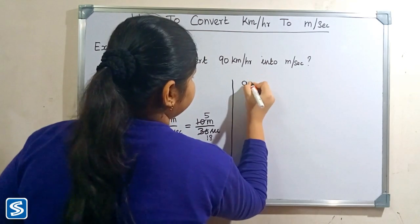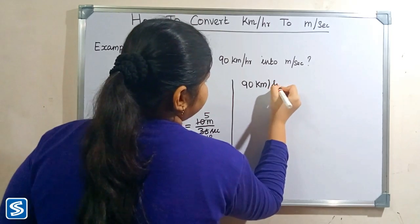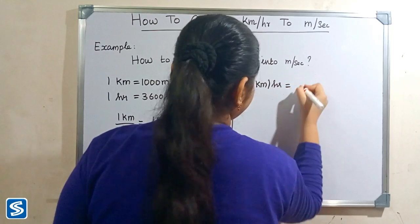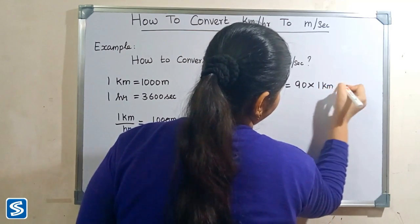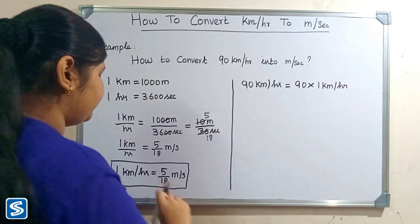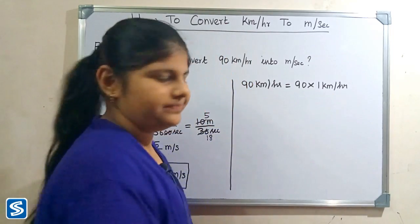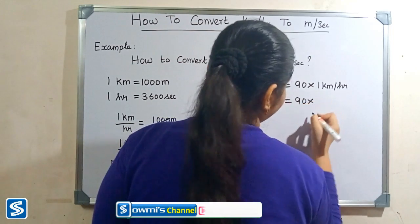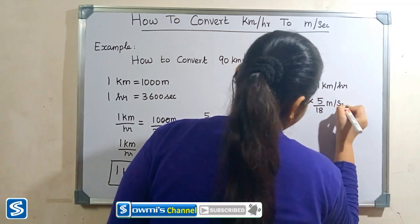So 90 kilometer per hour can be written as 90 multiplied by 1 kilometer per hour. Now we substitute 5 by 18 meter per second in the place of 1 kilometer per hour, giving us 90 multiplied by 5 by 18 meter per second.